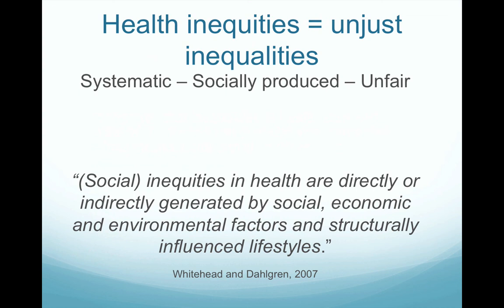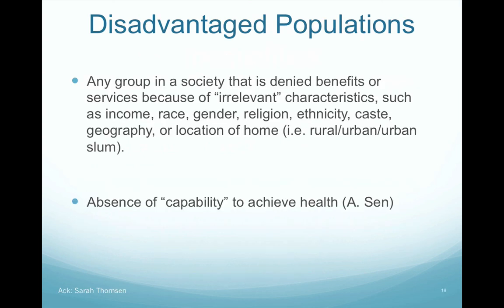Health inequities can be conceptualised as unjust inequalities — they are systematic, socially produced, unfair, and they can be remedied; they are not biological. Social inequities in health are directly or indirectly generated by social, economic, and environmental factors and structurally influenced lifestyles. A disadvantaged population is any group denied benefits or services because of irrelevant characteristics such as income, race, religion, ethnicity, or where they live — reflecting an absence of capability to achieve health because the structures in society are not in place. The goal with social determinants and an equity perspective is to achieve the health outcomes of the best-off group for the most disadvantaged population.